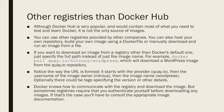Although Docker Hub is very popular and contains most of what you need to test and learn Docker, it is not the only source of images. You can use other registries provided by other companies, host your own repository, build your own image using a Dockerfile, or manually download an image from a file. If you want to download from a registry other than Docker's default, just specify the full pull path instead of just the image name.